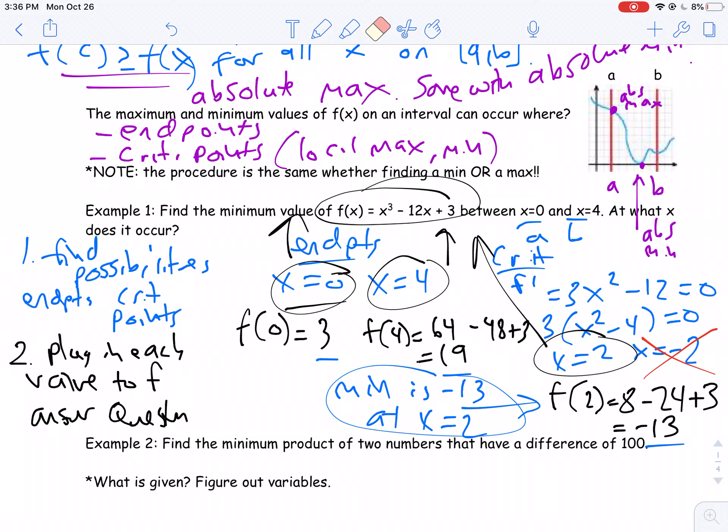This is how you want to write up your problems, and this is the work you need to be showing. But the important part here is that I went through, I listed each of my possibilities. I checked the endpoints. I checked the critical points. I plugged them all into my function, and I made sure I answered the question. It doesn't matter if you're doing a min or max. You're still going to do the same strategy. The strategy is the same in all of these problems. We look at the endpoints. We look at the critical points. We plug them.